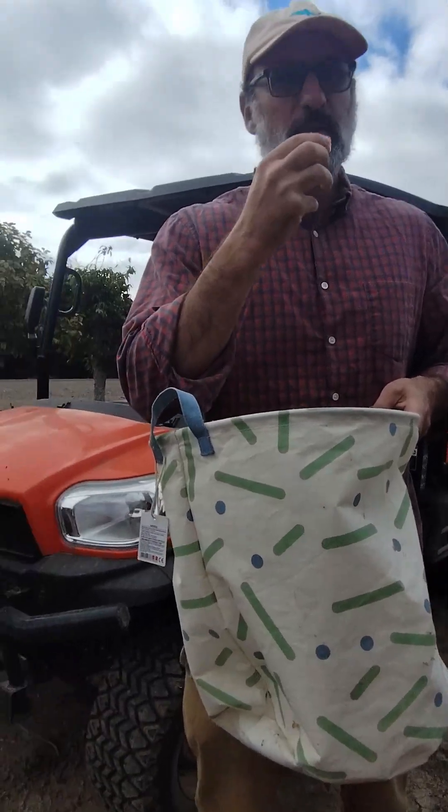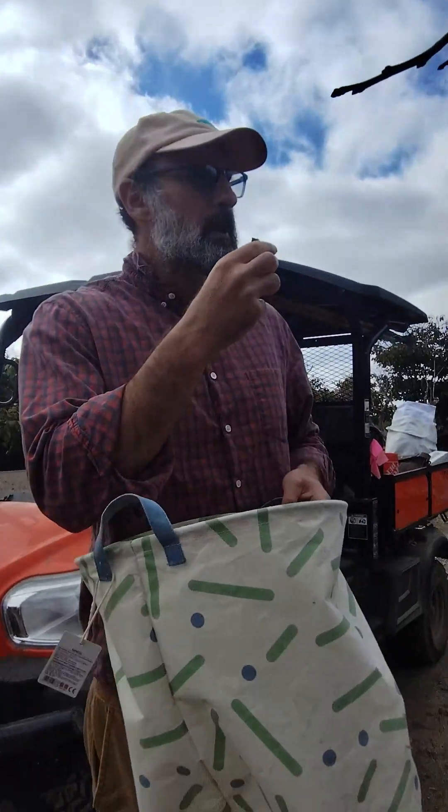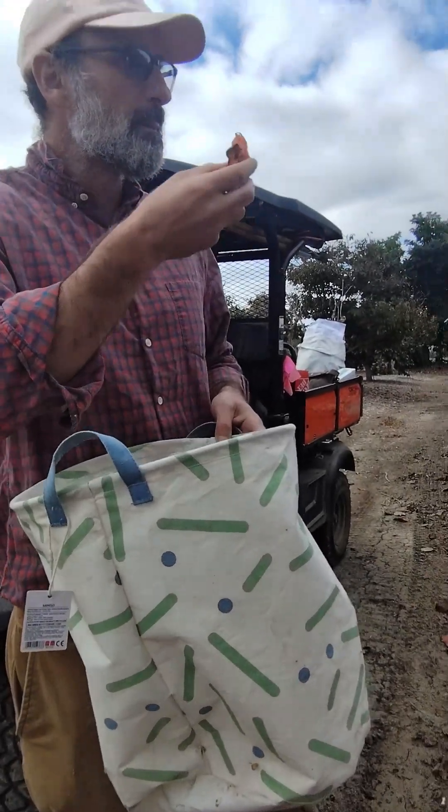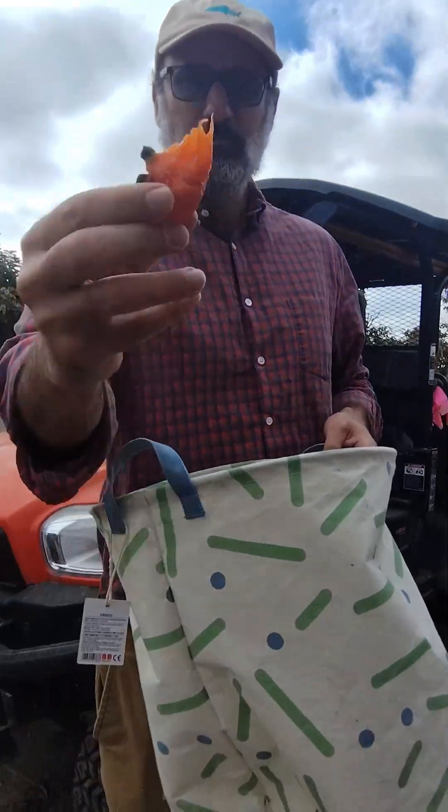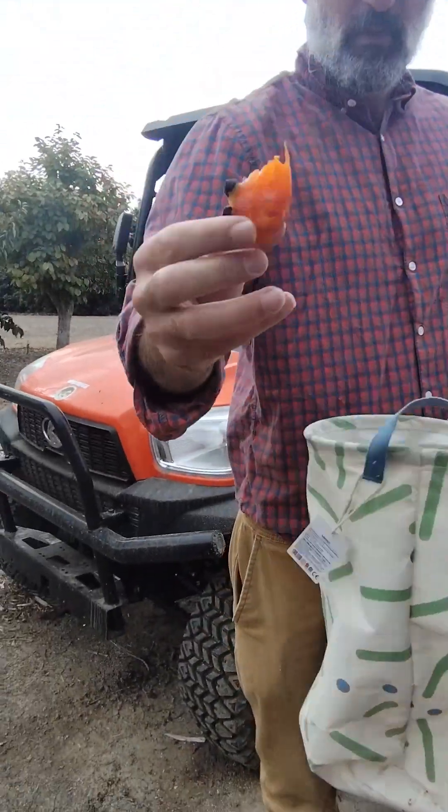Mushy. Native American persimmon. Oh, it's really... It is raisiny. But it's like boozy, that rum. Yeah, that's why. You know, yeast occurs naturally on fruit.